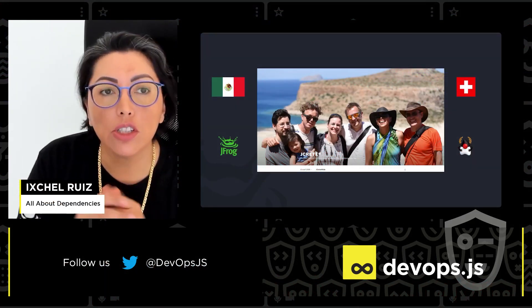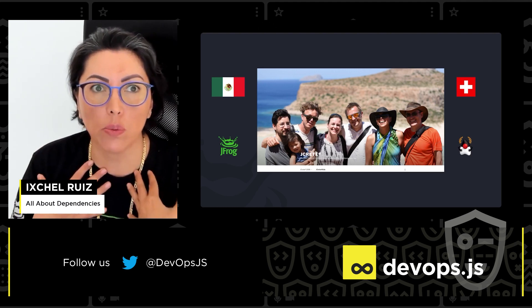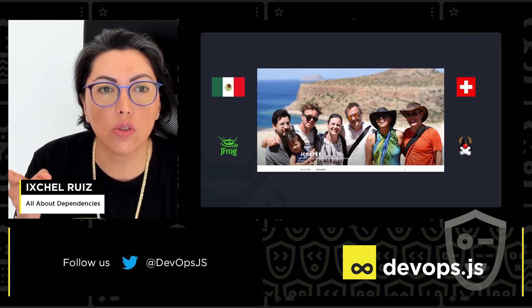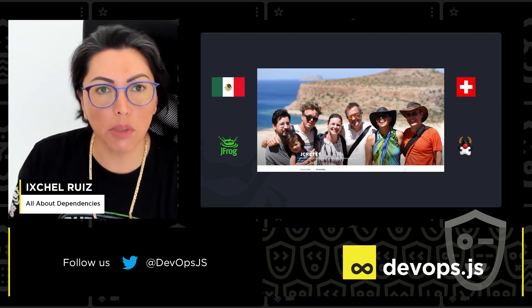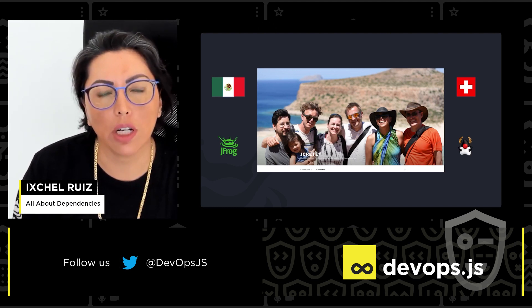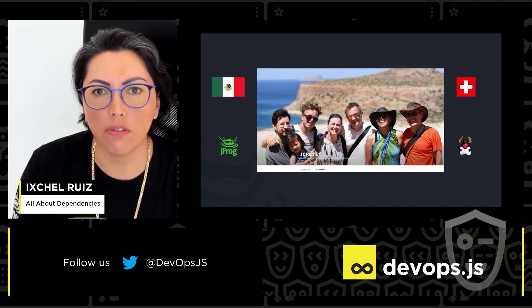Thank you very much for being here. My name is Ikshara Ruiz, I'm from Mexico, living in Switzerland. I'm a Java champion, and I work for a company, JFrog.